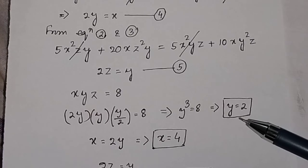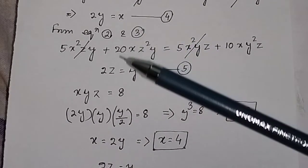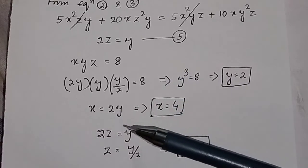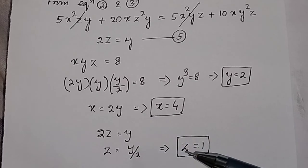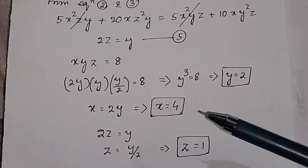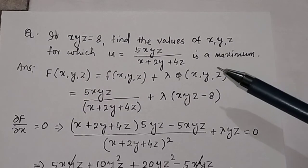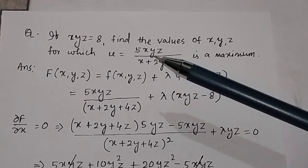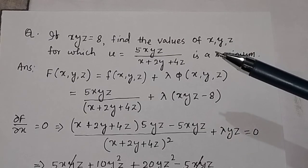Substituting y equals 2 into equation 4 (x equals 2y) gives x equals 4. Substituting y equals 2 into equation 5 (2z equals y) gives z equals 1. Therefore, the values that maximize u equals 5xyz divided by (x plus 2y plus 4z) subject to xyz equals 8 are x equals 4, y equals 2, and z equals 1.